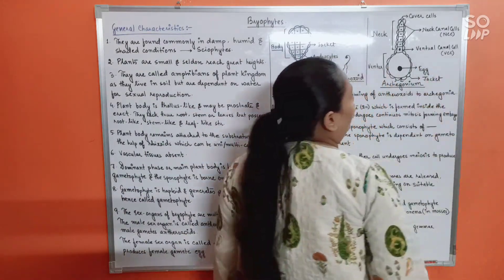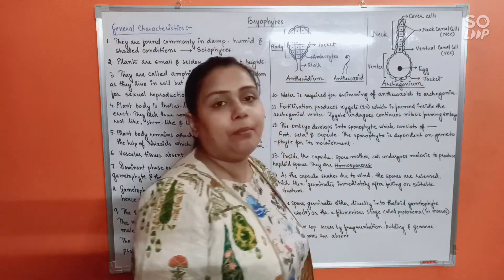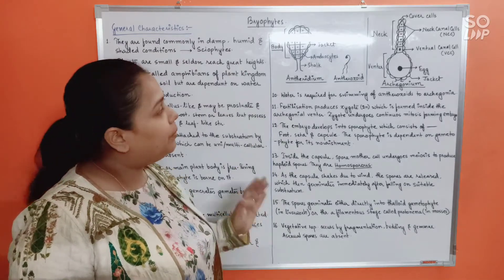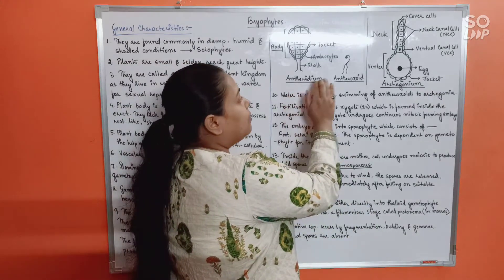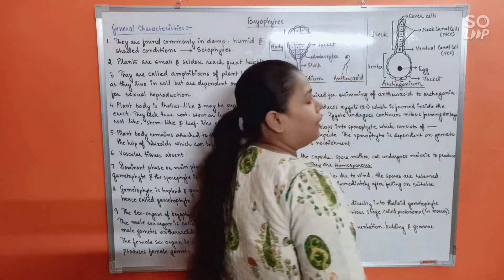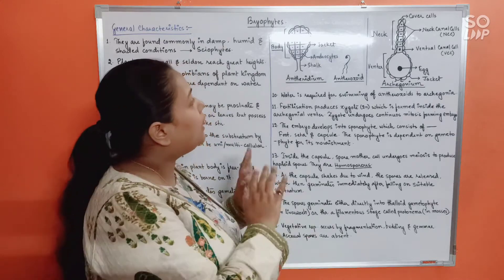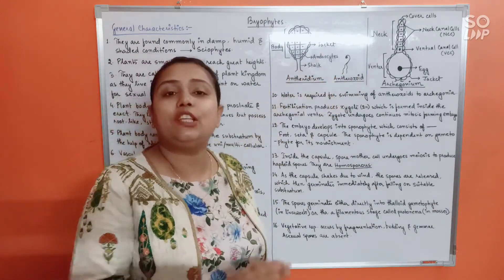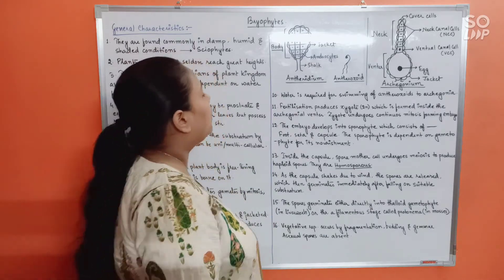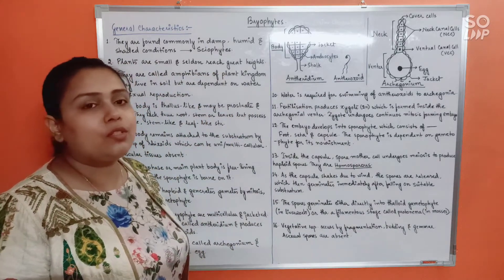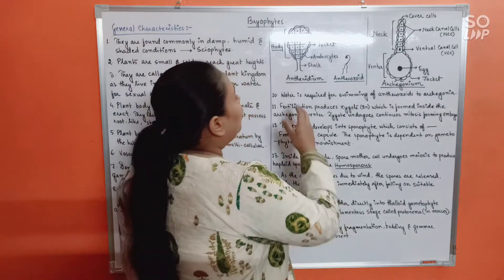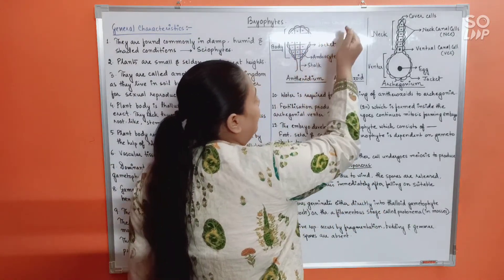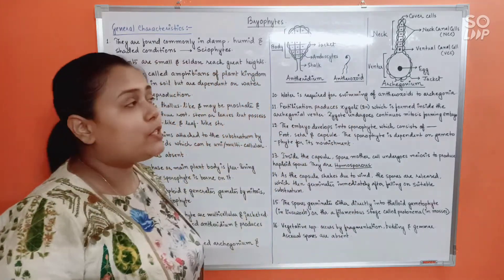In the archegonium, the neck contains linearly arranged neck canal cells (NCC). The last cell in the neck is called the ventral canal cell (VCC). Inside the venter remains the main female gamete — the egg — which is large and non-motile. Every cell in these multicellular sex organs is haploid. Water is required for swimming of antherozoids to archegonia; when the antheridium liberates the male gamete, the motile antherozoid must swim through water to reach the archegonia.